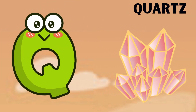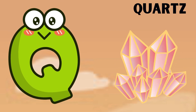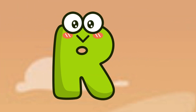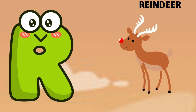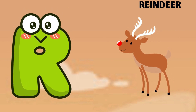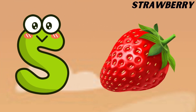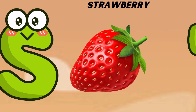Q is for quartz, q-q-quartz. R is for reindeer, r-r-reindeer. S is for strawberry, s-s-strawberry.